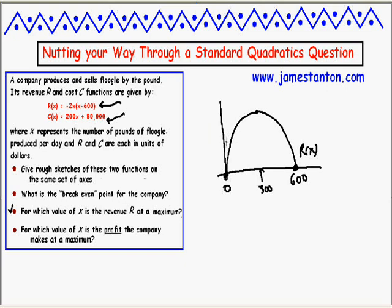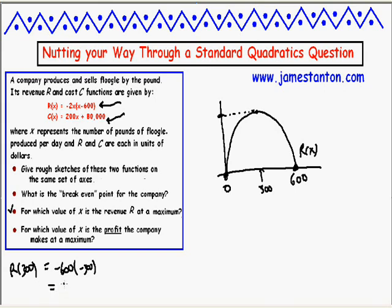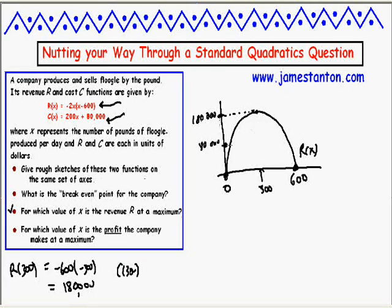Let's show all our work no matter what, because we know what game we're going to be playing. I need to know that this cost function actually sets up an intersection. Let me work out how high this quadratic is — which means I need to plug x = 300 into the revenue formula. r(300) = -600 × (300 - 600) = -600 × -300, so that's 6 × 3 with four zeros: 180,000. The quadratic reaches 180,000, and we've got a cost graph of slope 200 starting at 80,000, so it definitely is lower. There's a rough sketch of both functions on the same set of axes.